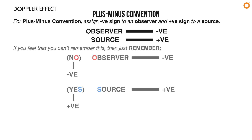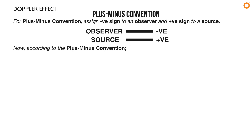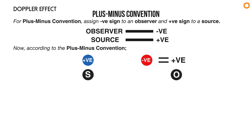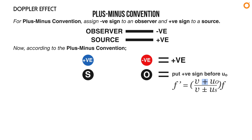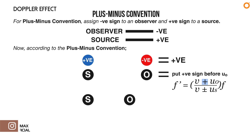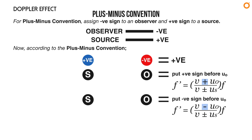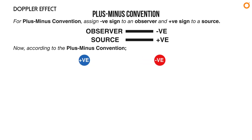According to the plus-minus convention, if negative moves towards positive, it becomes positive. This means when an observer (considered negative) moves towards a source (considered positive), put a positive sign before u₀ — the velocity of the observer — in Doppler's main equation. But if an observer moves away from a source, then put a negative sign before u₀.